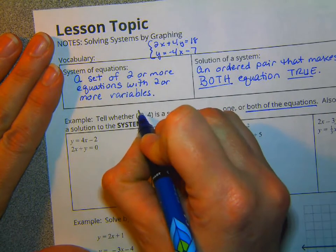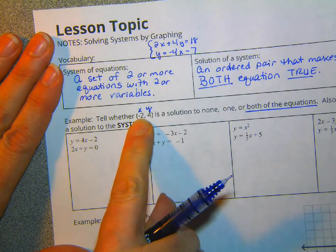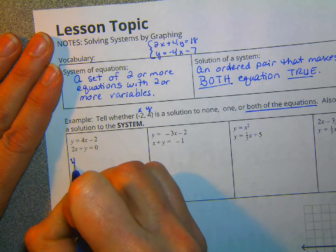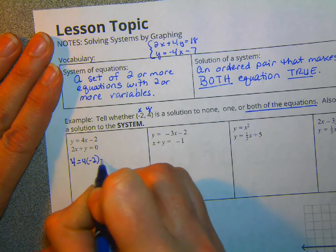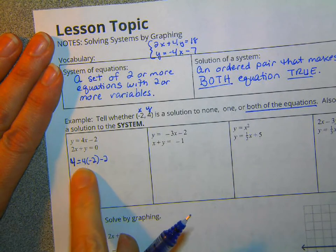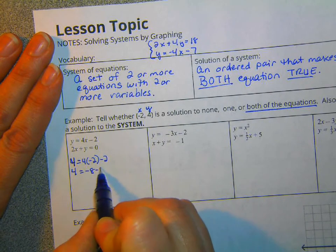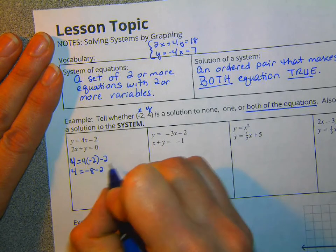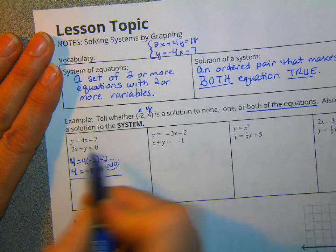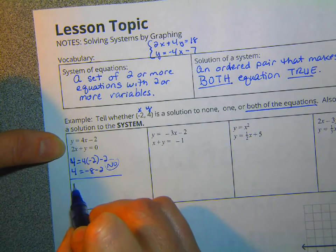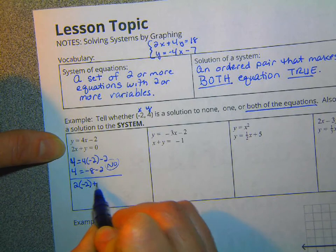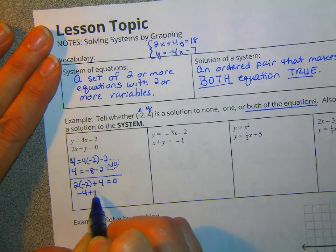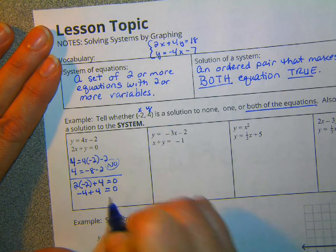So we're going to take, remember this is x and this is y. We're going to take negative 2 and put it in for x, and 4 and put it in for y, for each one of these. So here we've got y, which is 4, is 4 equal to 4 times negative 2 minus 2. Is 4 equal to negative 8 minus 2? We can answer that question right now, can't we? It's not a solution, is it?